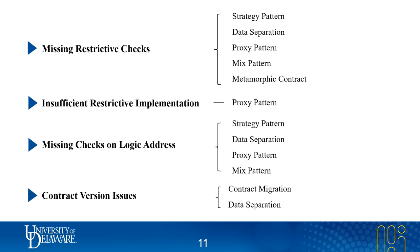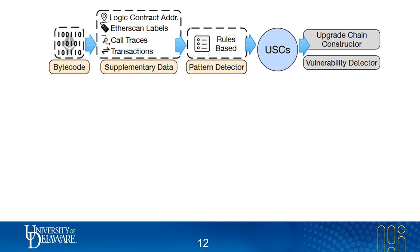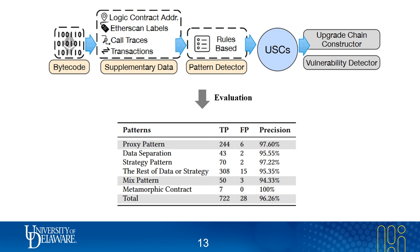Based on the characteristics of these upgradable patterns, we develop a tool, USC detector, to identify upgradable smart contracts and their security issues. USC detector collects various information such as smart contract bytecode and transaction information to detect six patterns of upgradable smart contracts and construct their upgrade chains. We evaluate the precision of USC detector using 750 upgradable smart contracts, and the result shows that our tool can achieve a high precision of 96%.